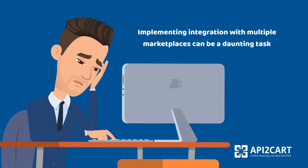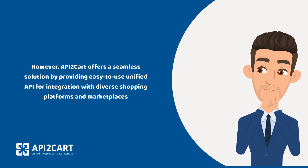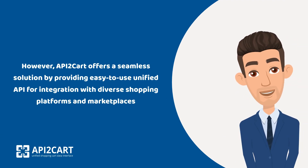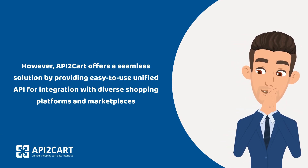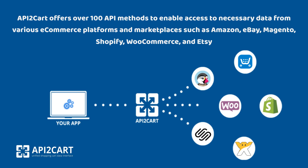Implementing integration with multiple marketplaces can be a daunting task. However, API2Cart offers a seamless solution by providing an easy-to-use unified API for integration with diverse shopping platforms and marketplaces. API2Cart offers over 100 API methods to enable access to necessary data from various e-commerce platforms and marketplaces such as Amazon, eBay, Magento, Shopify, WooCommerce, and Etsy.